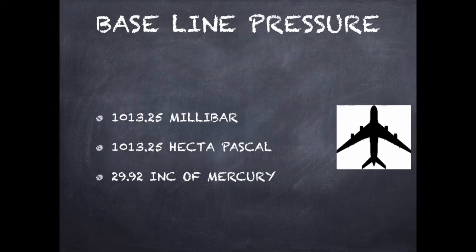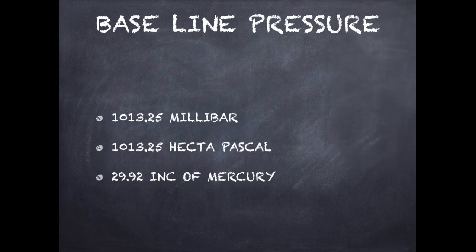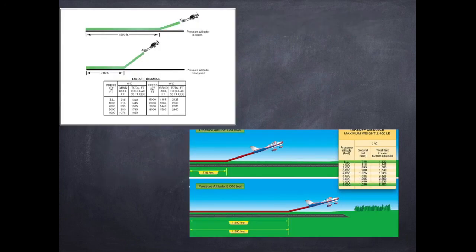The performance tables in your aircraft handbook are based upon standard atmospheric pressure which uses this baseline pressure. So you have to calculate pressure altitude to determine your ground roll and takeoff distance.